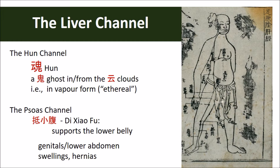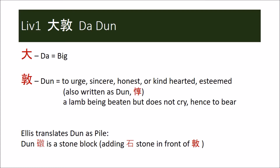The last points, liver 13 and 14, are clearly related by name to death and to the hun returning to the ancestors — where the breath and the ribs reach their end, where there is no more movement of breath. The physical connection to the ancestors is also through the descendants, through the genitals and reproductive region, which the channel passes through and props up. The symptoms of the liver channel include pain in the groin, inability to bend or look up, hernias, and abdominal swellings — anyone with cysts or fibroids is considered to have a liver deficiency.